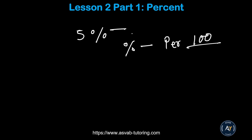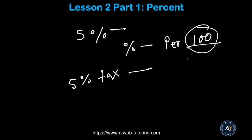For example, a five percent discount means five dollars off every hundred dollars. A five percent tax means you need to pay an extra five dollars on every hundred dollars. Remember this concept: 'cent' means hundred, and 'per' means every, so percent means every hundred.